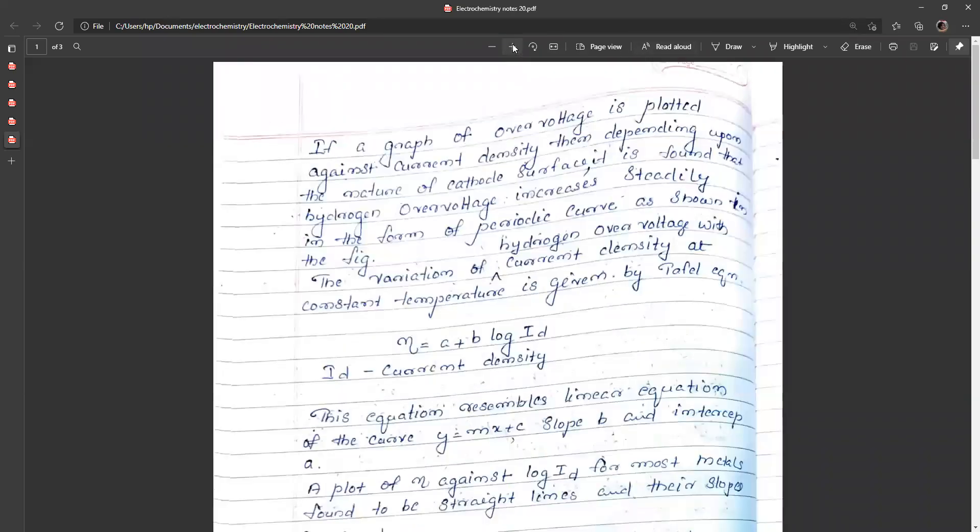Let us continue the discussion of Tafel theory. If a graph of overvoltage is plotted against current density, then depending upon the nature of cathode surface, it is found that hydrogen overvoltage increases steadily in the form of a parabolic curve in the figure.